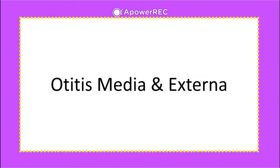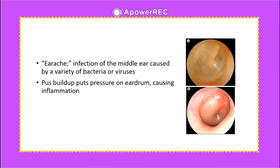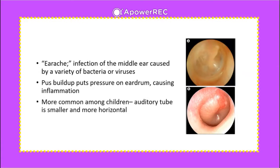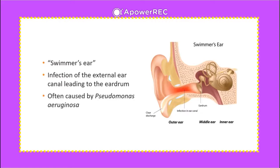Next term: otitis media and externa — earaches where we have infection of the middle ear caused by a variety of bacteria or viruses. Pus builds up, puts pressure on the eardrum, and causes inflammation. This is more common among children, whose auditory tube is smaller and more horizontal. Swimmer's ear is infection of the external ear canal and is often caused by Pseudomonas aeruginosa.